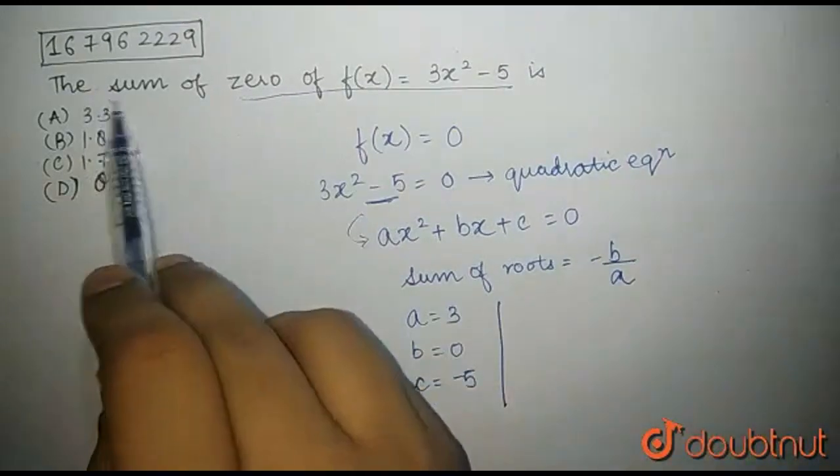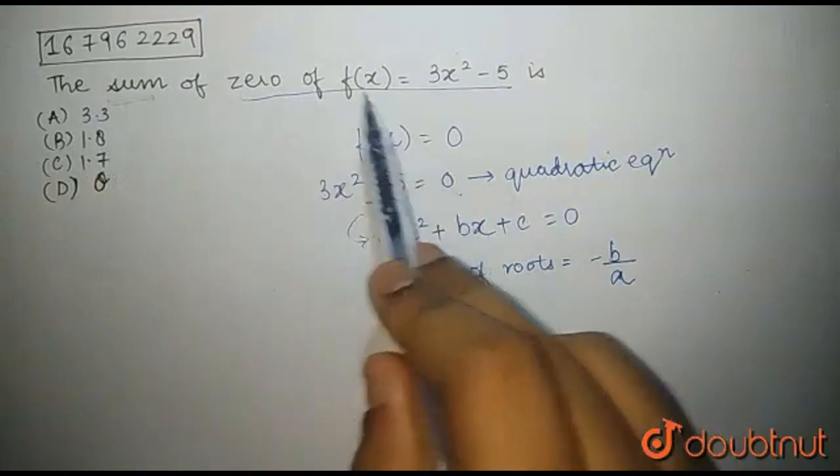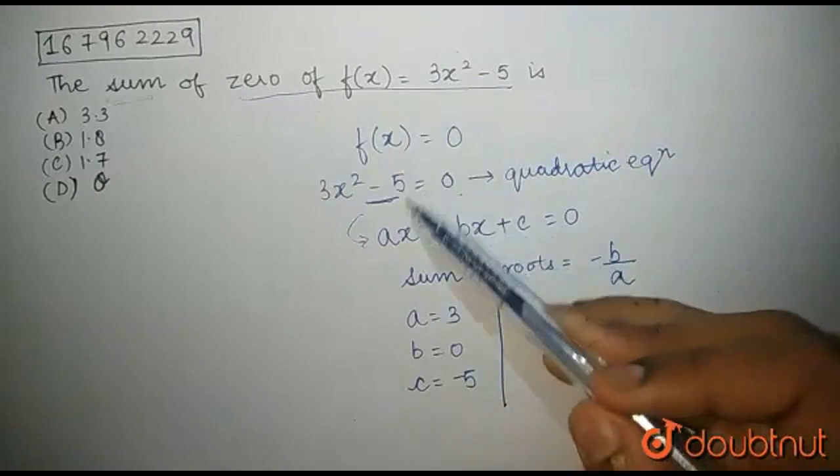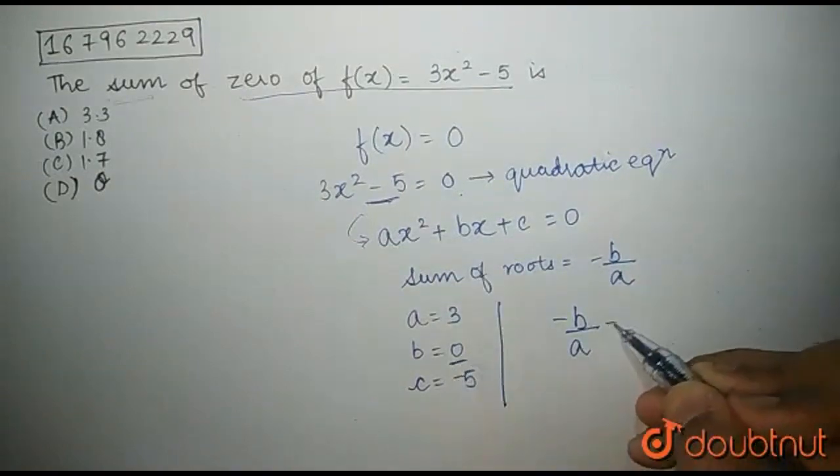Since the question says that we have to find the sum of roots of this equation, the sum of zeros of f(x), therefore, the sum of roots has to be -b/a.